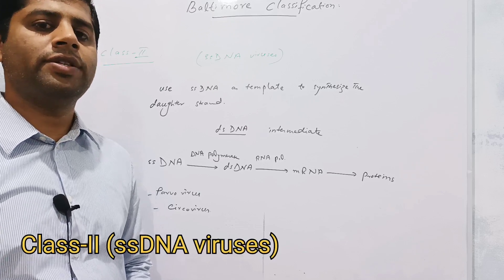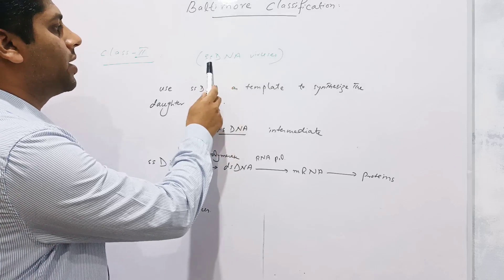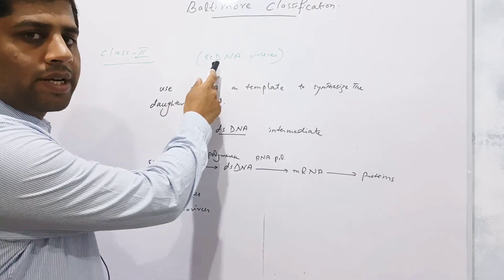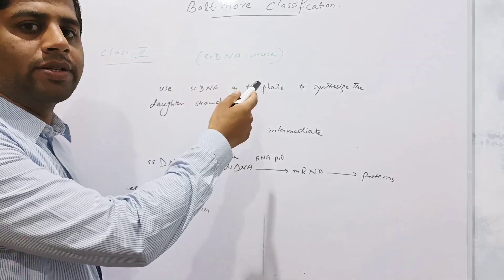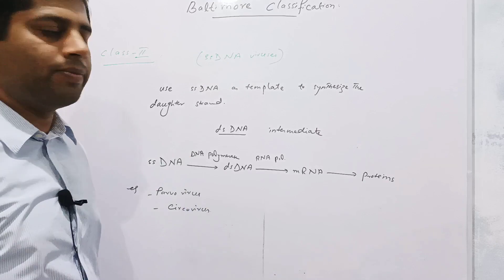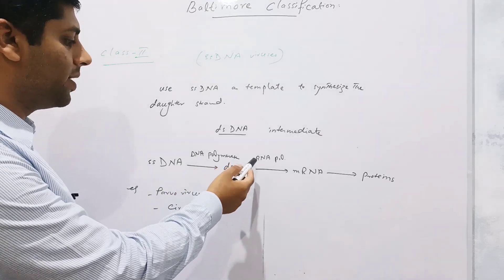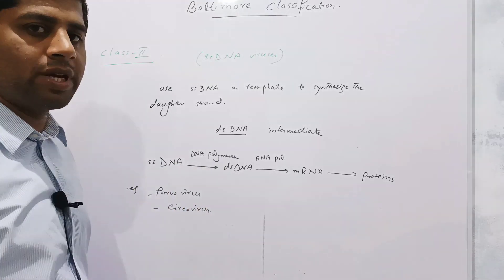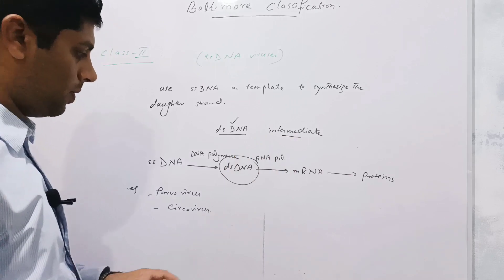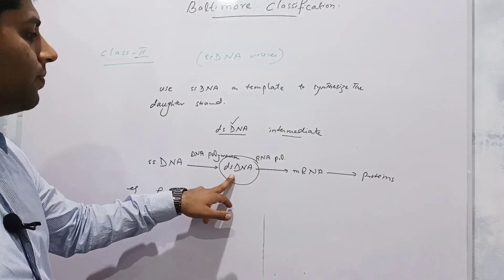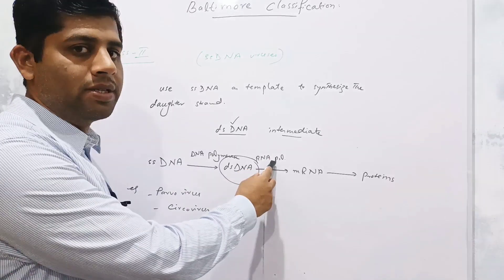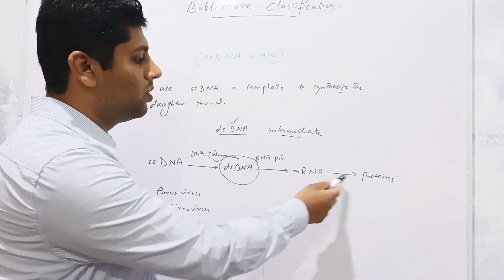The second class of Baltimore Classification System comprises viruses with a genome of single-stranded DNA. These viruses use the single strand of DNA as a template to synthesize a complementary strand, converting the single-stranded DNA into double-stranded DNA. The enzyme required here is DNA polymerase. This double-stranded DNA then acts as an intermediate and is transcribed into messenger RNA using DNA-dependent RNA polymerase enzyme, which is then translated into proteins.